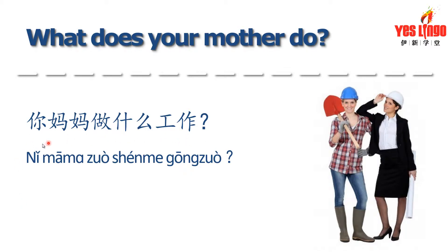你妈妈做什么工作? Remember, 你妈妈 means your mom. Even though we have left out the possessive particle 的, because 你 is a personal pronoun and 妈妈 is a kinship term, so 你妈妈 can mean your mom. 做 is the verb for to do, and we've already learned that 什么 means what in a question, and 工作 means job or work, so 你妈妈做什么工作 literally means your mom does what job.